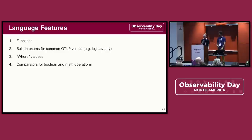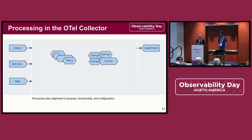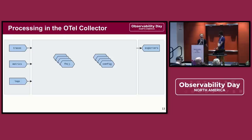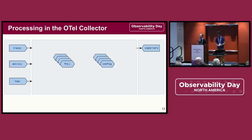OTTL also has where clauses that allow you to define under which conditions a transformation should occur, and you can combine conditions using its Boolean operators. For cases where you need to work with numeric values, there's a standard set of math operators. When we take a look at the prior landscape of overlapping or missing functionality and mismatched configs and processors, this becomes cleaned up. All signals are now processed the same way, config formats match, and the user can easily express their desired transformations.